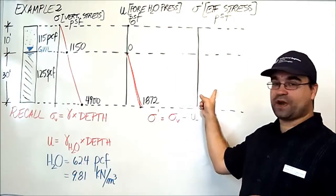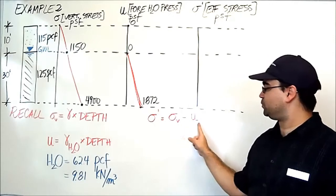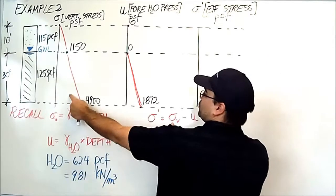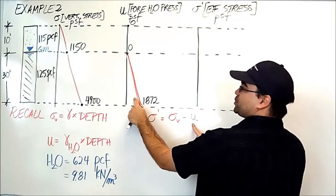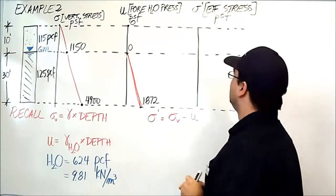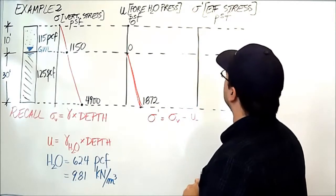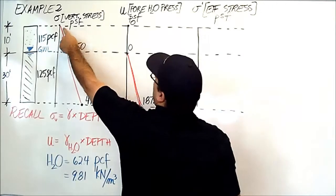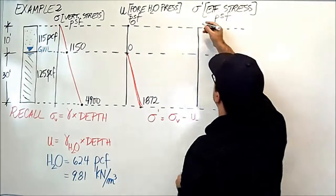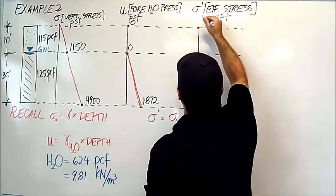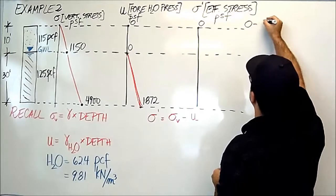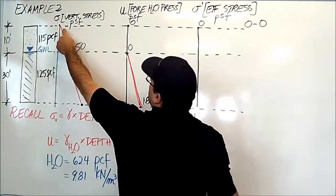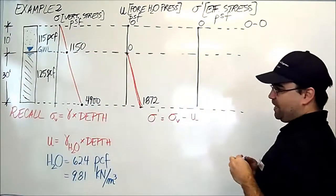Again, to get the values on this graph, you simply subtract the two. You subtract the vertical stress and the pore water pressure. Let's do it. The first point here: zero minus zero equals zero. And I'm just going to write it up here. I got it by doing zero minus zero.